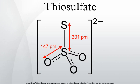Thiosulfate is an oxyanion of sulfur. The prefix thio indicates that the thiosulfate ion is a sulfate ion with one oxygen replaced by sulfur. Thiosulfate has a tetrahedral molecular shape with C3V symmetry.